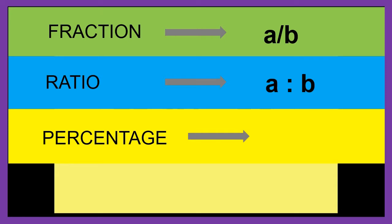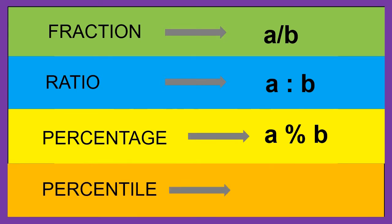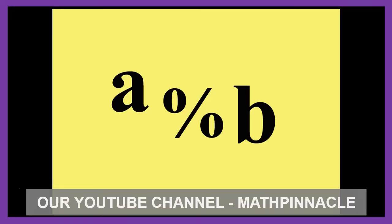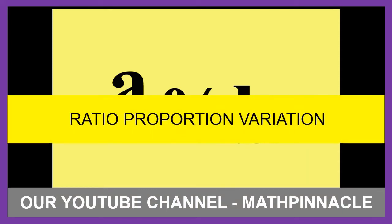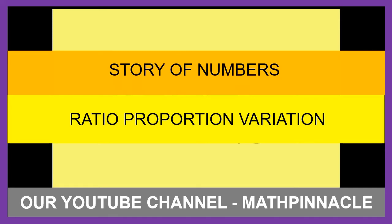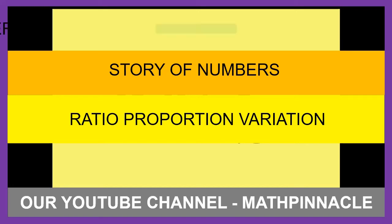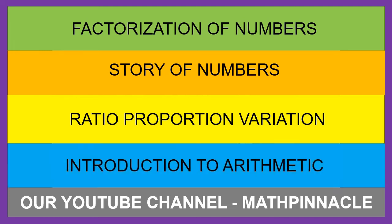Ratios are a better way of expressing and comparing quantities, also derived from fractions, where A by B becomes A is to B. Percentages are the most polished way to study and present two quantities of the same physical type and are highly used in the corporate world. We highly recommend watching our videos on ratios, proportion and variation; different types of numbers in 'Story of Numbers'; factorization of a number; and basics of arithmetic in 'Introduction to Arithmetic'.